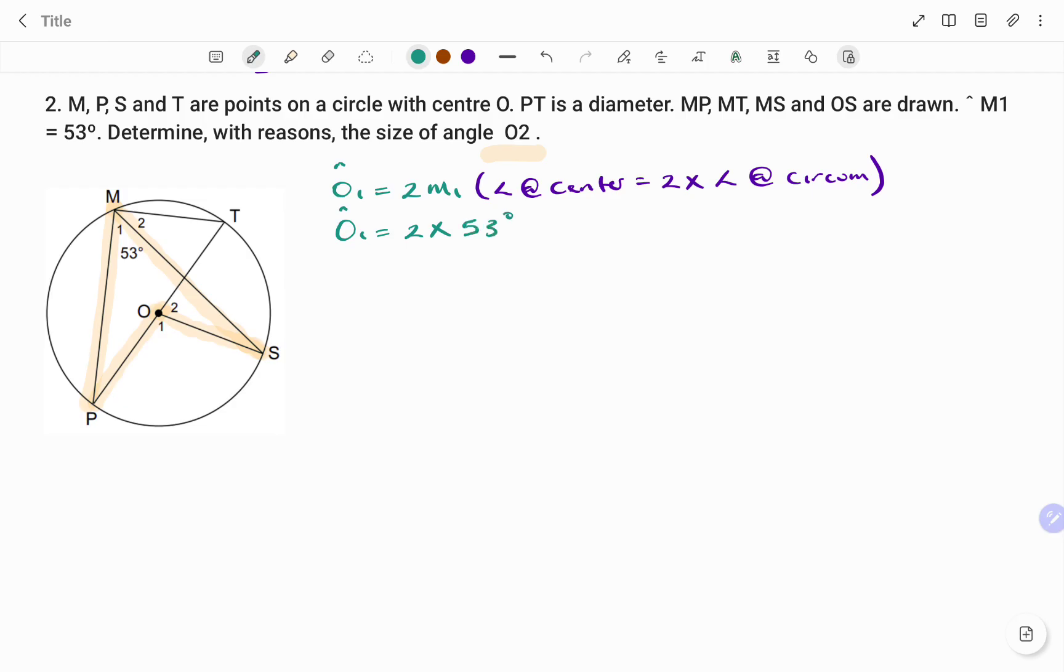Therefore, O1 is equal to 2 times M1. M1 is 53 degrees. Therefore, angle O1 is equal to 2 times 53, that's 106 degrees. Now, going back to the diagram, we've been told from the question that the line PT is the diameter. So, if I draw my diameter as shown,